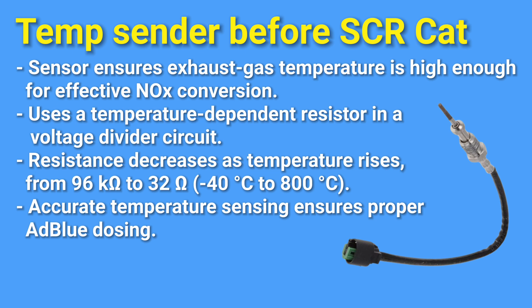The effectiveness of NOx conversion is contingent upon the temperature within the SCR catalytic converter. Temperature sensing is achieved using a temperature-dependent resistor with a voltage divider circuit, enabling resistance measurement based on temperature. The resistance value is converted to temperature using a specific characteristic line for the temperature sensor. The sensor employs an NTC — negative temperature coefficient resistor — whose resistance decreases as temperature rises, varying from 96 kilohms to 32 ohms, corresponding to a temperature range of minus 40°C to 800°C.